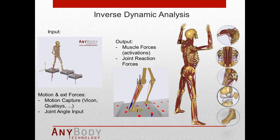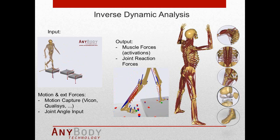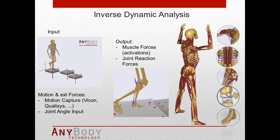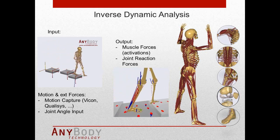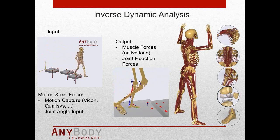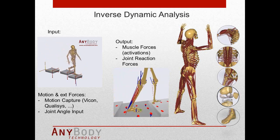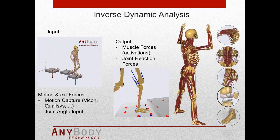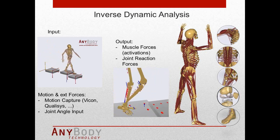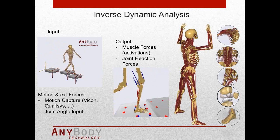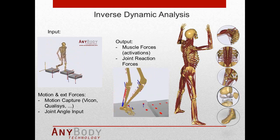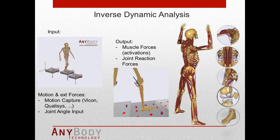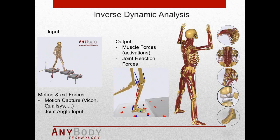The motion comes either from a recording — a motion capture system with markers like Vicon, Qualysis, Simi, or suits like Xsens, Animazoo — or if no recording is available, it's possible to define the motion by joint angle input, specifying how certain joints move over time. The system will then compute for all muscles and joints in the model the forces, activation profiles, and joint moments.